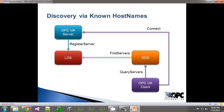Even in cases where machines are moved to different locations and potentially given different host names, the application URI can be used to discover that a particular application has moved. This diagram here shows the complete process: the server registers itself with the LDS, which is a well-defined part of the specification. The GDS comes along, calls find servers, updates its database, and a client can later find that server and connect to it.